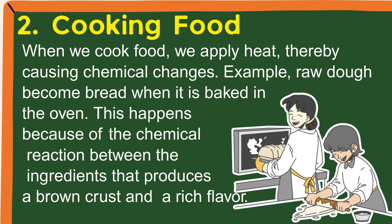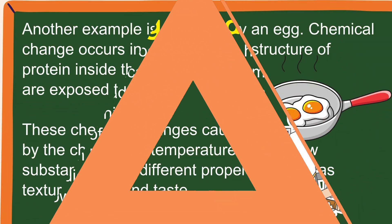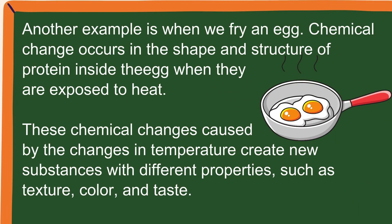2. Cooking food — when we cook food, we apply heat, causing chemical changes. For example, raw dough becomes bread when it is baked in the oven. This happens because of the chemical reaction between ingredients that produces a brown crust and a rich flavor. Another example is when we fry an egg — chemical changes occur in the shape and structure of protein inside the egg when exposed to heat. These changes in temperature create new substances with different properties such as texture, color, and taste.